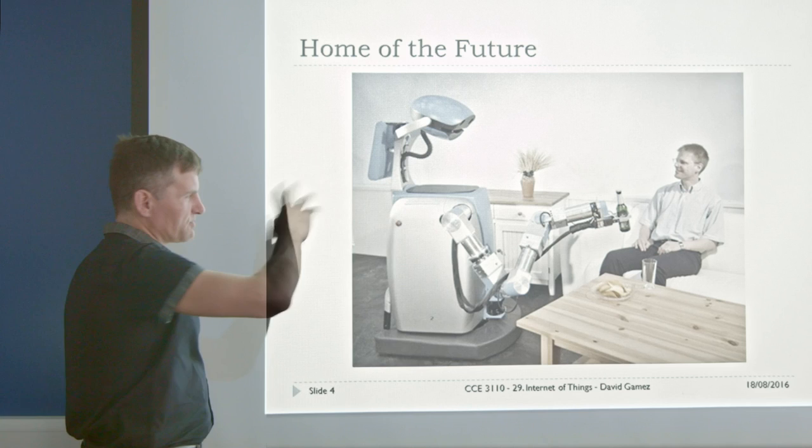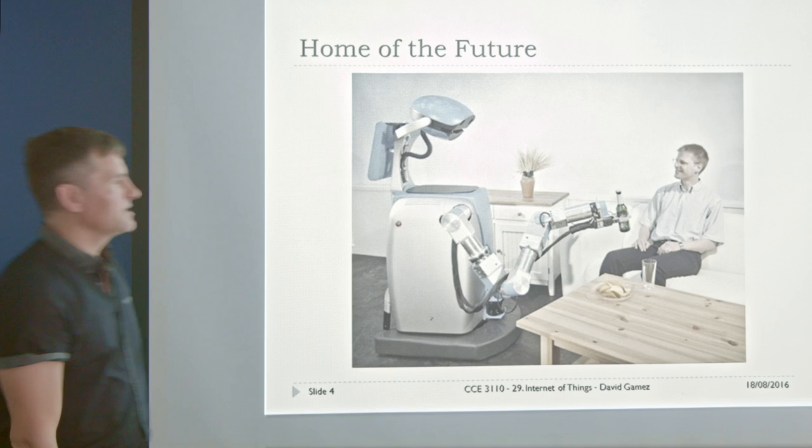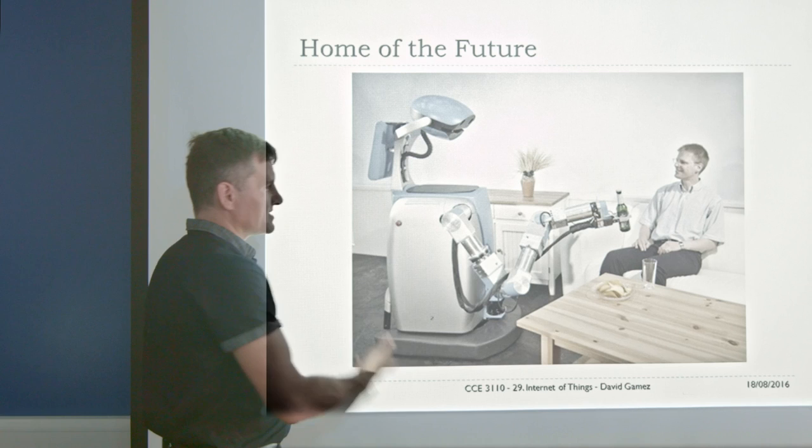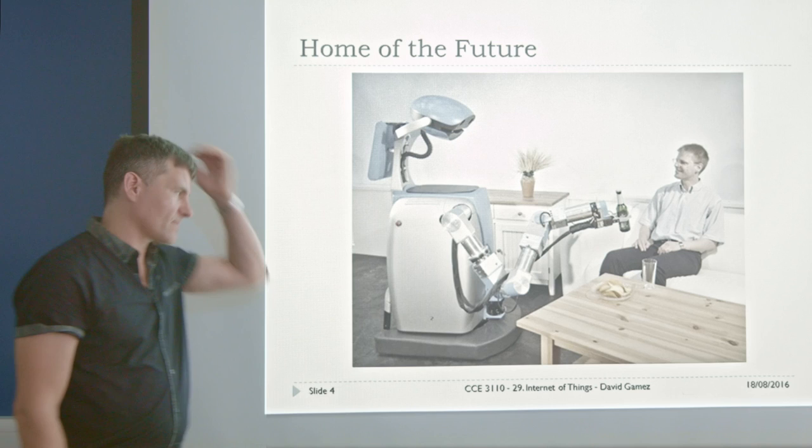A few years ago, this might have been the vision of the home of the future — a single super-intelligent robot that hoovered the floor, cooked the dinner, brought you a beer and some crisps when you felt a little bit thirsty. But this vision is slowly dying.